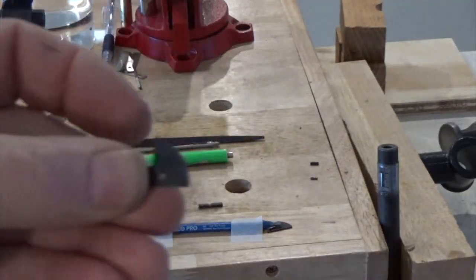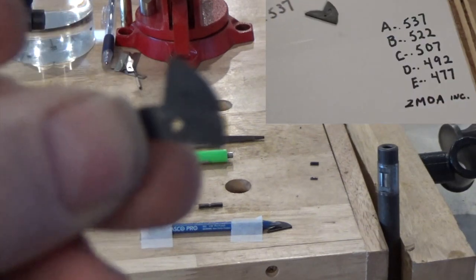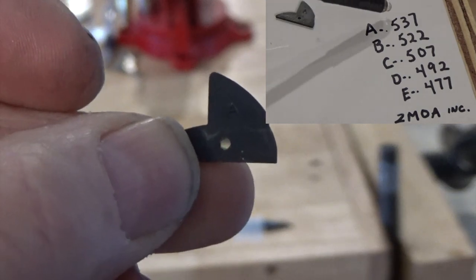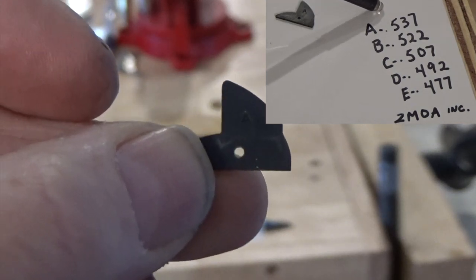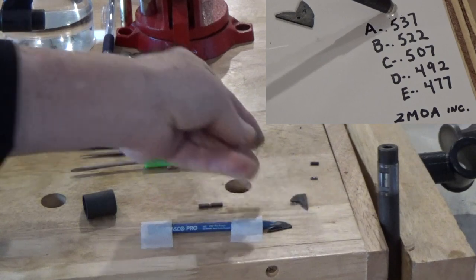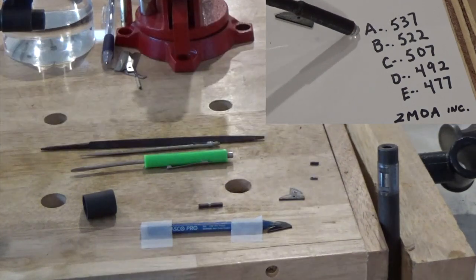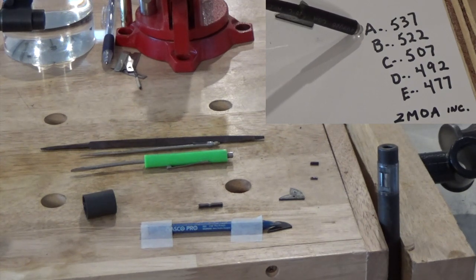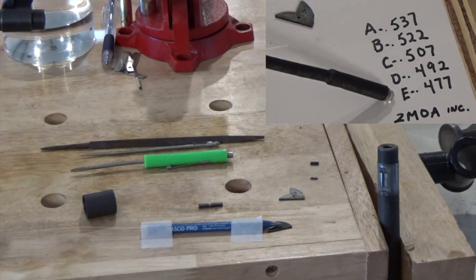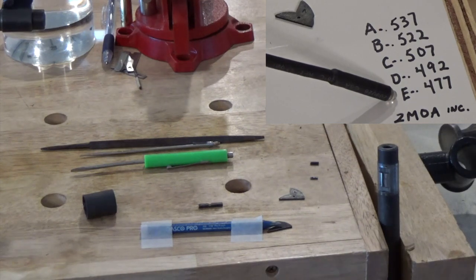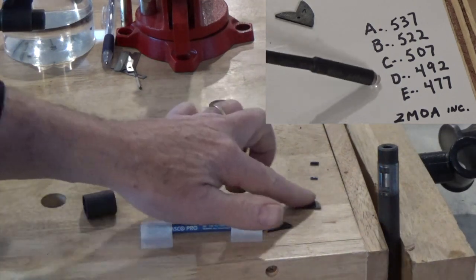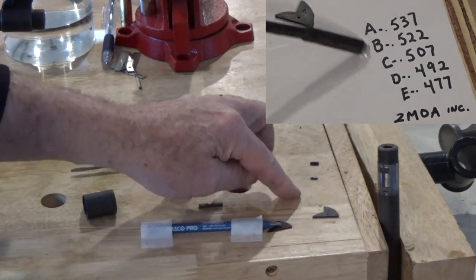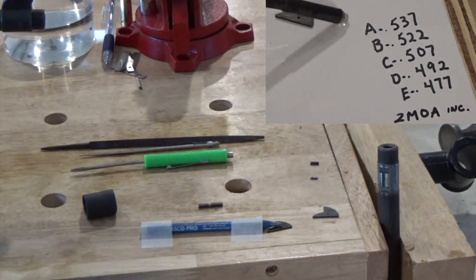These blades have sizes A through E and the taller the front sight, the lower the impact of your shots. The A sight is 0.537 of an inch and E is 0.477. You can mix and match and each different sight is in an increment of two minutes of angle.